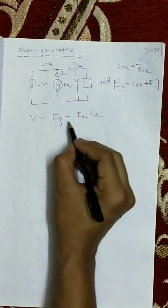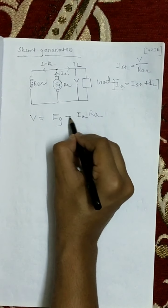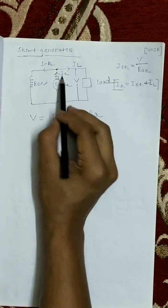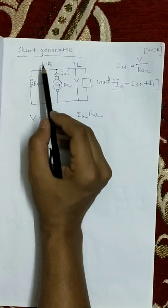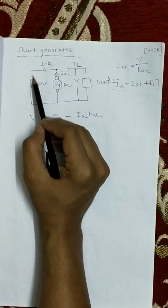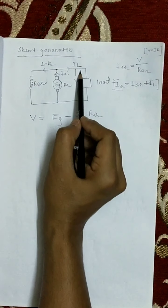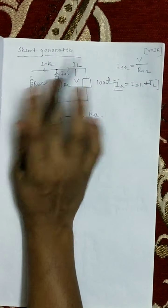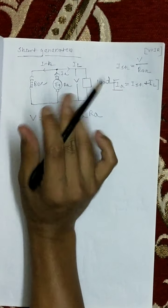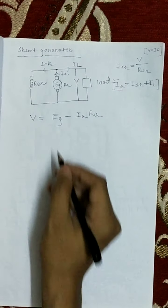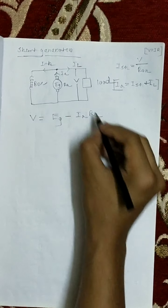The terminal voltage V equals to EG minus IA·Ra. This is because in a shunt generator, the armature current, shunt field current, and load current are all different from each other.